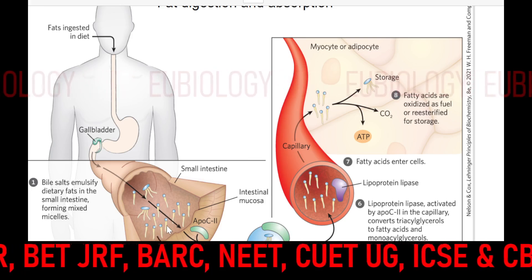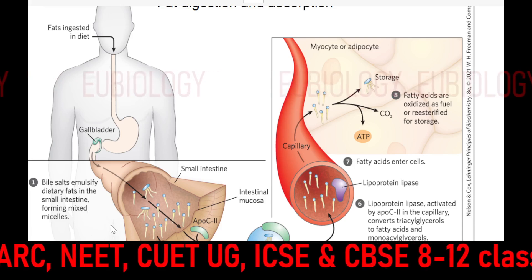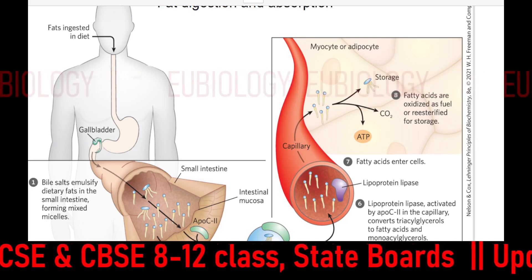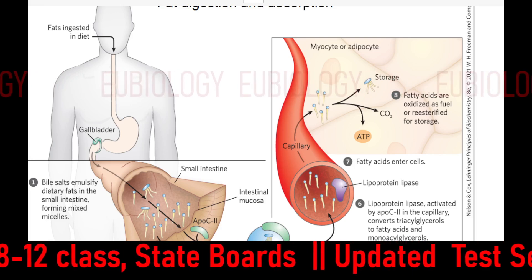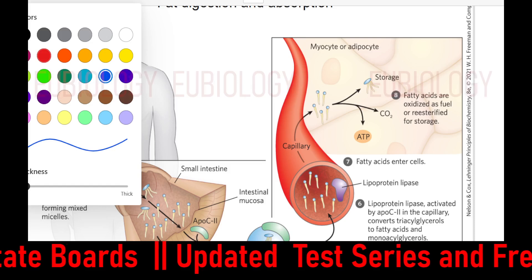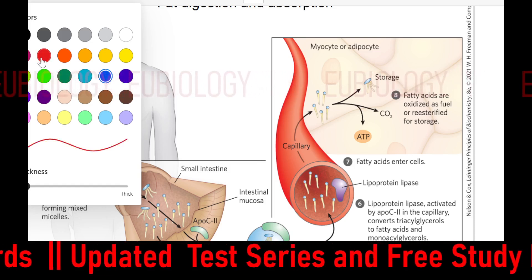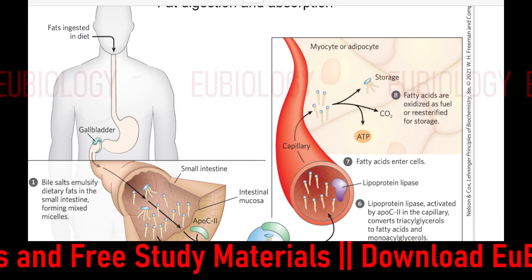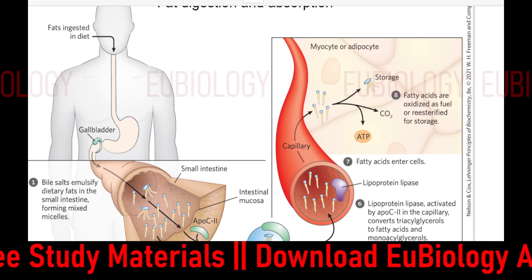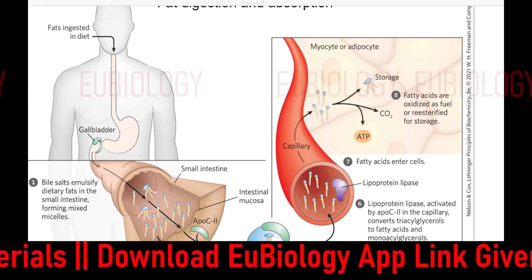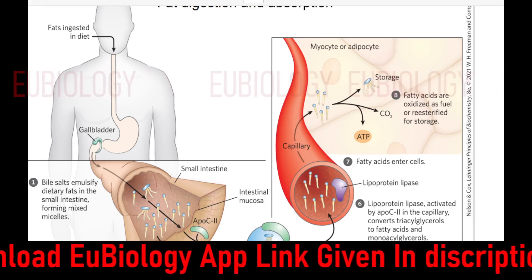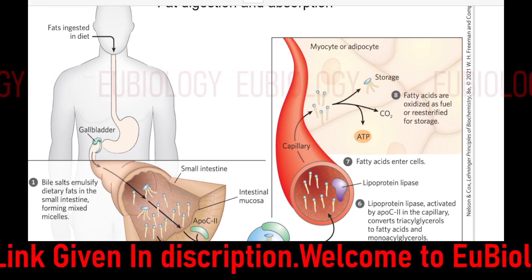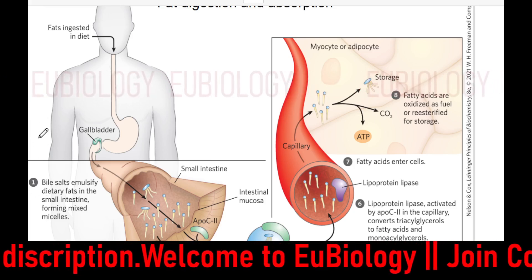The bile salts form a micelle-like structure — round, with the bile salts surrounding it on all sides. Suppose this is a lipid: it will be surrounded by all the bile salts. So what will happen? Now this fat can be easily broken down and will become solubilized, so that lipase — which is soluble in water — will be able to act on this lipid.